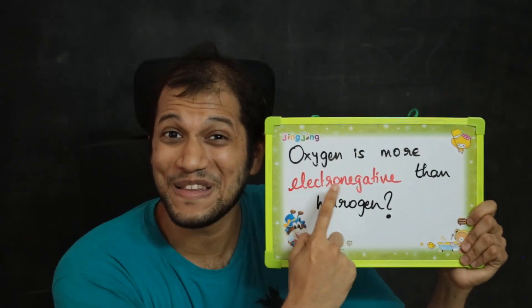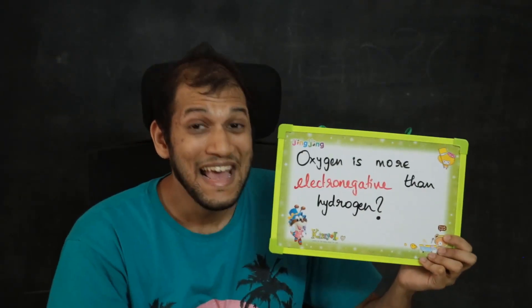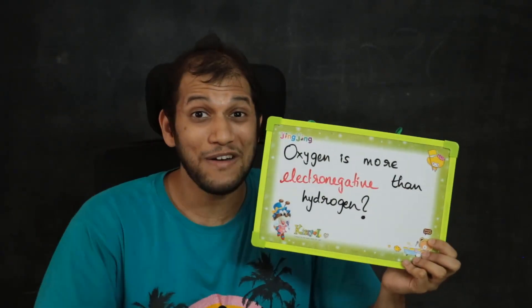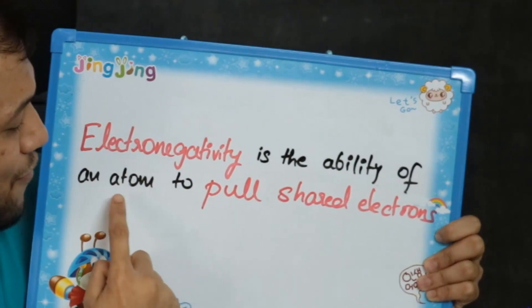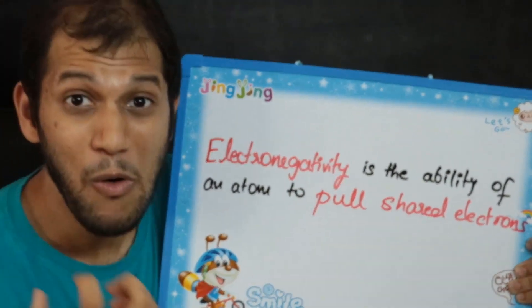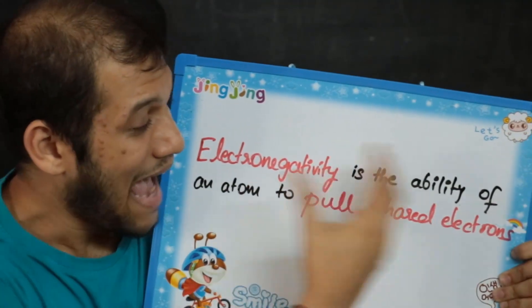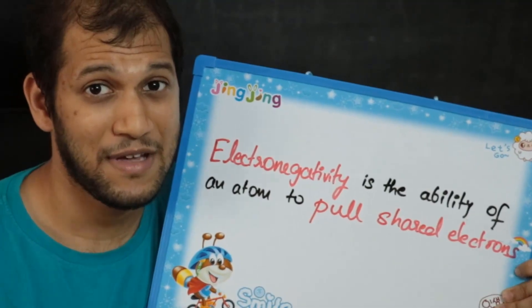Because oxygen is more electronegative than hydrogen. So in this video, we'll see what is the meaning of electronegativity, what does this statement mean, and how does this make water liquid at room temperature. To begin, electronegativity is the ability of an atom to pull shared electrons. More electronegativity means the atom can pull the shared electrons more towards itself.